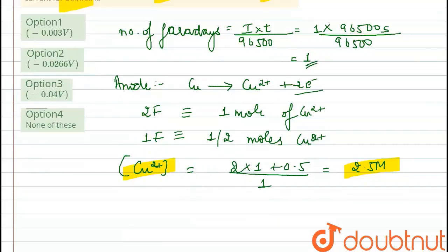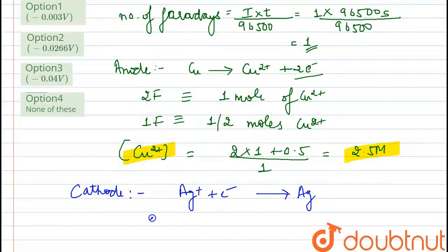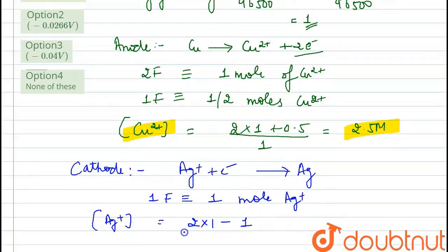In a similar fashion, the reaction at the cathode is Ag⁺ + e⁻ → Ag. Here, one electron is involved, so 1 Faraday is equivalent to 1 mole of Ag⁺ consumed. The new concentration of Ag⁺ = (2 × 1 − 1) / 1 = 1 molar.